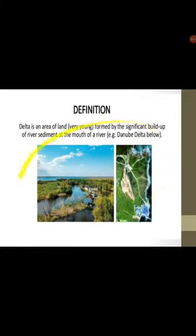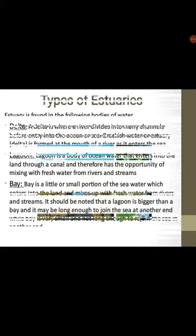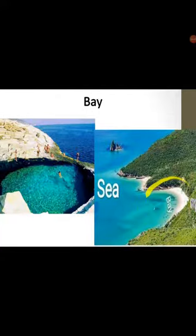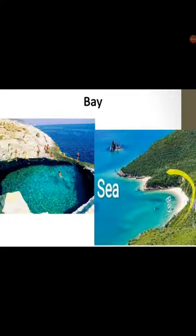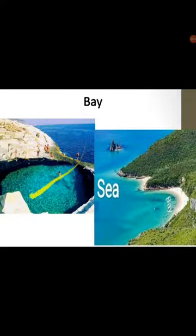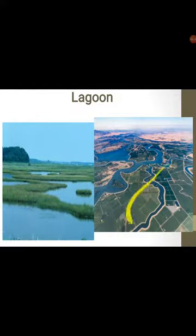This is a delta — a delta is where a river cuts into many channels. This is a bay: you can see the bay is an extension of the sea, a little water that extends from the sea to the land. When you go to the beach side, you would see a particular section where there is a little accumulation of water — that place is called a bay. And this is a lagoon.